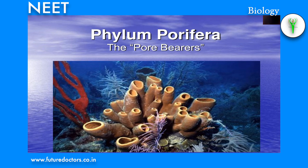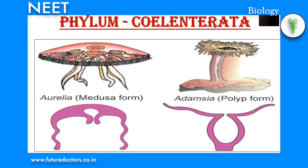Sponges lack sensory and nerve cells so they are poor in response to stimuli. Sponges reproduce both sexually and asexually. Asexual reproduction occurs by budding or gemmules (internal buds). Sexual reproduction involves the fusion of ova and spermatozoa. Fertilization is internal — sperms of one sponge are carried by water current to the ova of another sponge. Development is mostly indirect with larval stages called parenchymula or amphiblastula.